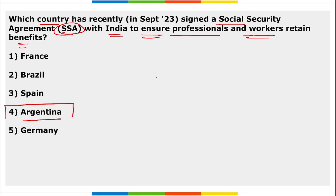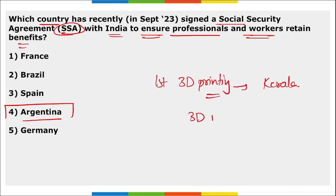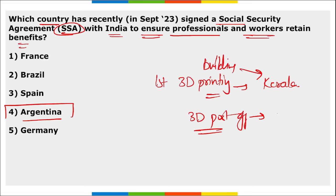The first 3D-printed building was inaugurated in Kerala. The first 3D-printed post office will be in Bangalore, Karnataka.